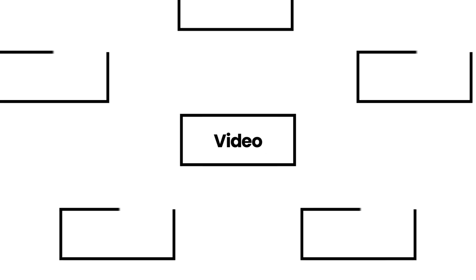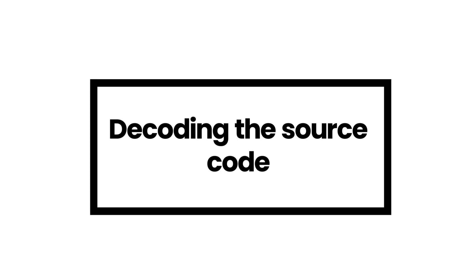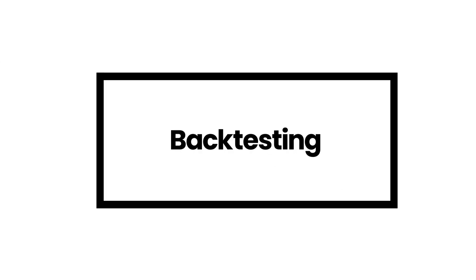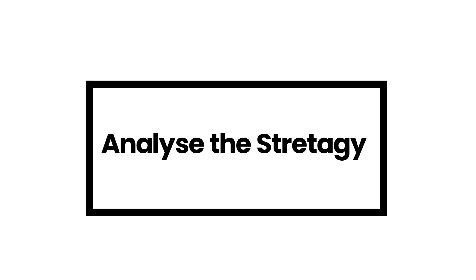This video consists of five parts. In the first part, we will completely break down the strategy, considering everyone as an absolute beginner. In the second part, we will decode the source code and understand the major indicators and logic. In the third part, we will backtest on the last five years of data, from January 2019 to January 2024, on 70 coins and multiple time frames. In the fourth part, we will hyper-optimize the parameters. In the last part, we will analyze the dos and don'ts, pros and cons, and on which time frames this strategy should not be used.